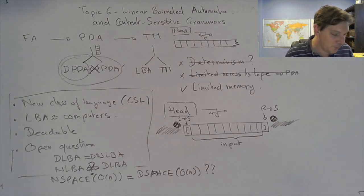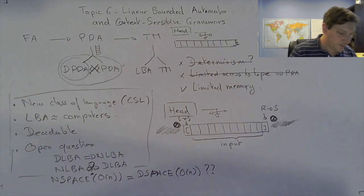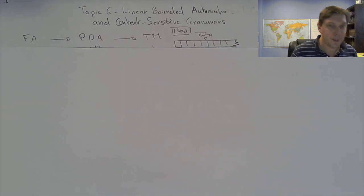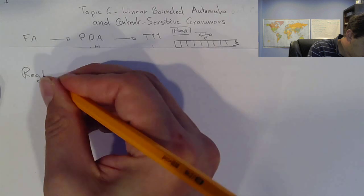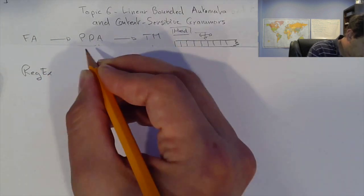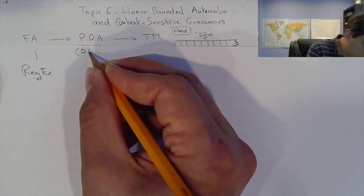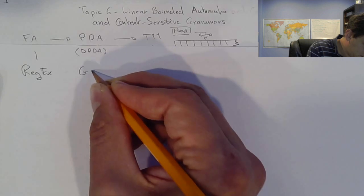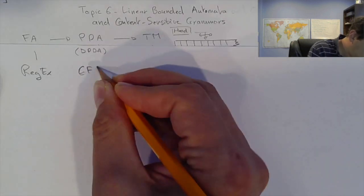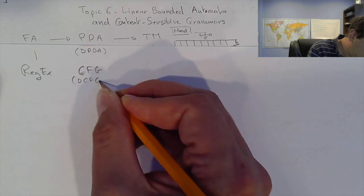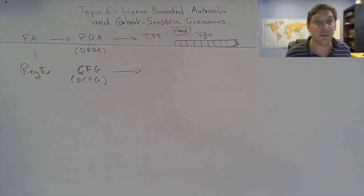We have regular expressions associated with finite automata, and context-free grammar — or deterministic context-free grammar — associated with PDA or DPDA. Now the question is: what about Turing machines? We haven't talked about the grammar associated with that, but of course there is one. And the same question applies for LBA.